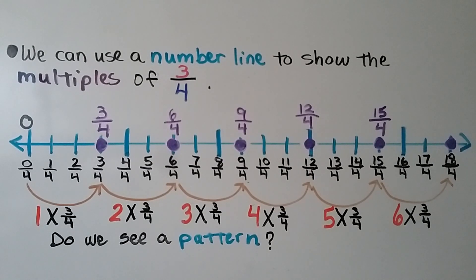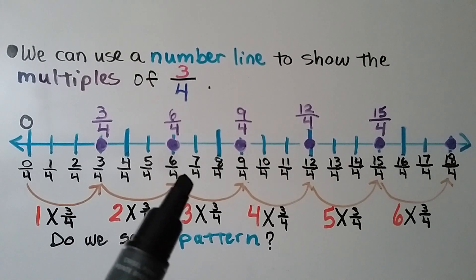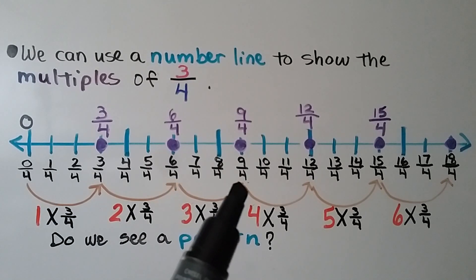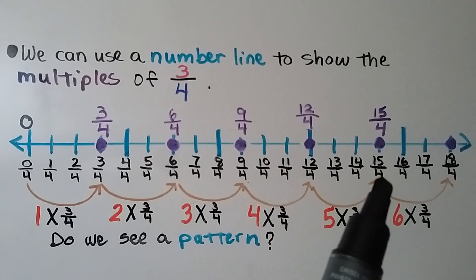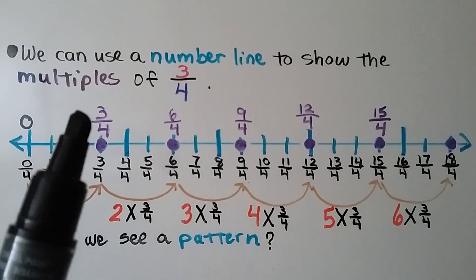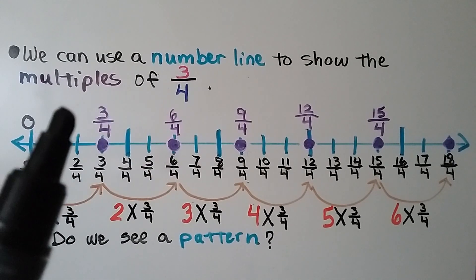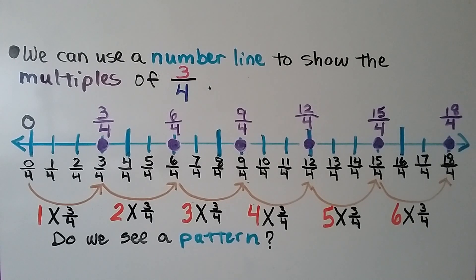We can use a number line to show the multiples of 3/4. Starting at zero, 1 times 3/4 is 3/4; 2 times 3/4 is 6/4; 3 times 3/4 is 9/4; 4 times 3/4 is 12/4; 5 times 3/4 is 15/4; 6 times 3/4 is 18/4. The numerators are the multiples of 3 — that is, 3, 6, 9, 12, 15, 18 — and all the multiples of 3/4 share the same denominator 4.